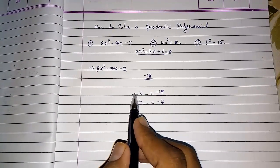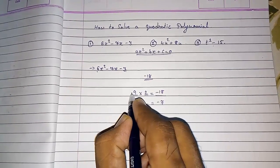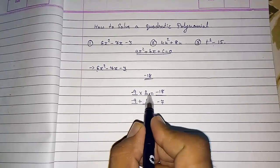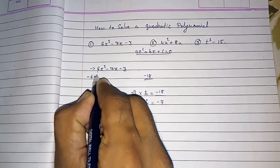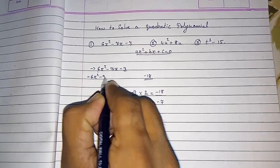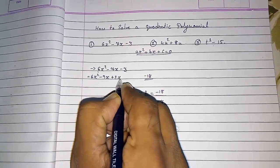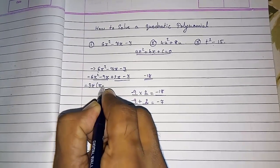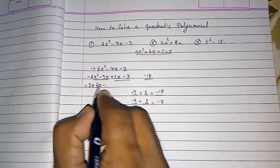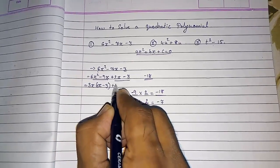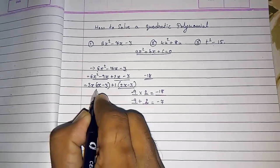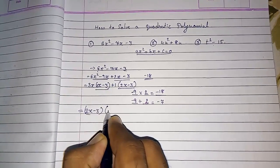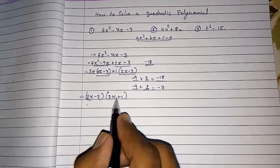That will be -9 × 2, since 9 × 2 = 18 and the minus is there, so -9 + 2 gives -7. So our two factors are -9 and 2. We split -7x into -9x + 2x, giving 6x² - 9x + 2x - 3. Taking 3x common from the first two terms gives 3x(2x - 3), and 1 common from the last two gives 1(2x - 3). We get (2x - 3)(3x + 1) as the two factors.